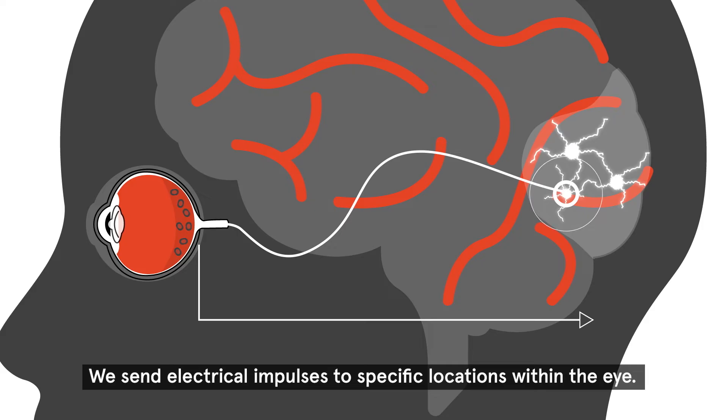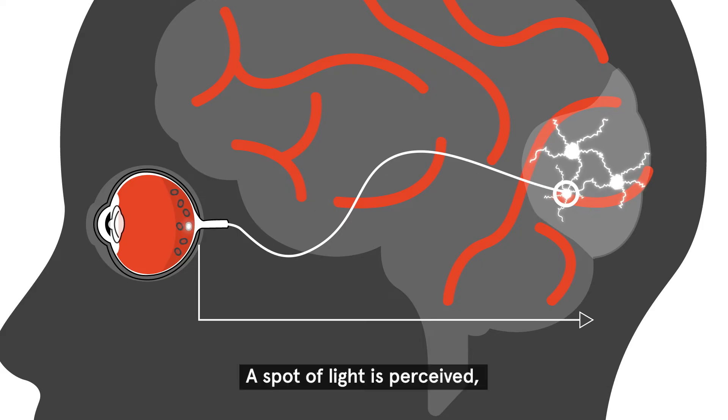We send electrical impulses to specific locations within the eye, a spot of light is perceived, and patterns can be formed.